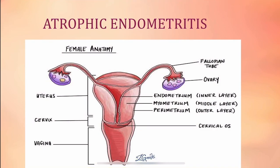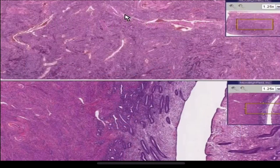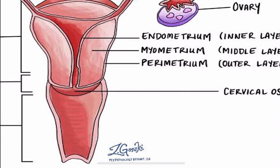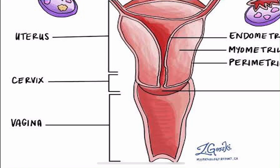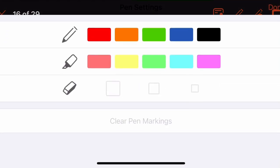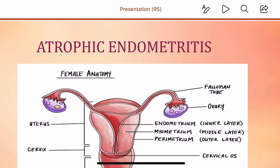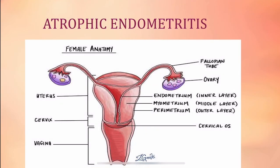Atrophic endometritis is also known as senile endometritis. After menopause, the endometrium loses its resistance and is no longer shed repeatedly. Infection gains entrance into the uterus, presenting as senile endometritis. The defense is lost: there is no estrogen and no shedding of the endometrium. The endometrium has very small scanty remnants and very little lining, so it feels as if there is no endometrium at all.